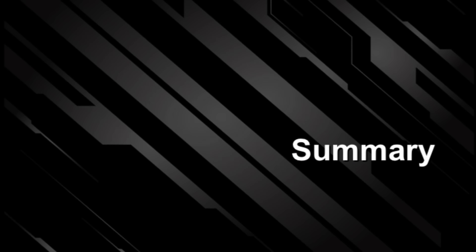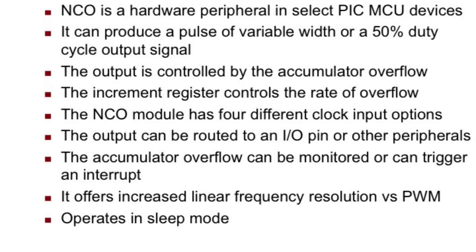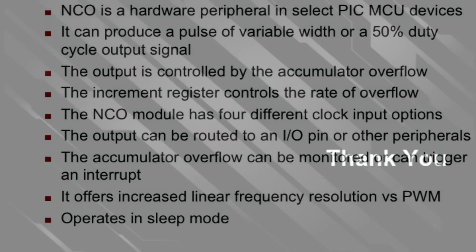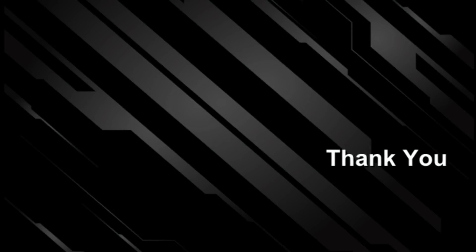Now let's summarize what we've covered. The NCO is a hardware peripheral in select PIC MCU devices. It can produce a pulse of variable width or a 50% duty cycle output signal. The output is controlled by the accumulator overflow, and the increment register controls the rate of overflow. The NCO module has four different clock input options. The output can be routed to an I/O pin or other peripherals, and the accumulator overflow can be monitored or can trigger an interrupt. It offers increased linear frequency resolution versus PWM and operates in sleep mode. Thank you for watching this training presentation.